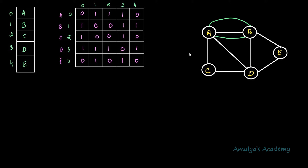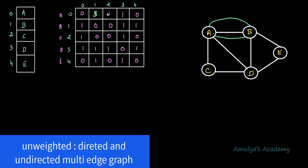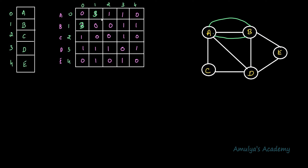To store a multiple edge graph in the adjacency matrix, instead of storing 1 we can store the number of edges between those two nodes. For example, if A to B has three edges, instead of storing 1 we store 3. If there is no edge, represent it as 0; if there is one edge, represent it as 1. So for unweighted directed and undirected graphs, instead of storing value 1, store the number of edges between the vertices. For the weighted graph, I don't have a satisfactory explanation so I will skip that.